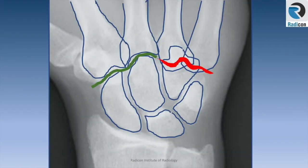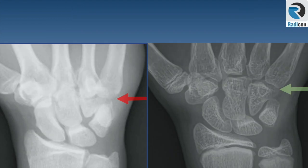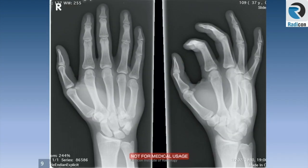Let's put a normal and abnormal CMC gap side by side. There is overlapping or impaction at the bases of the 4th and 5th metacarpal and the hamate bone. So this is a case of fracture dislocation of the 4th and 5th CMC joint, and you can see how clear it was on the zoomed-up images.